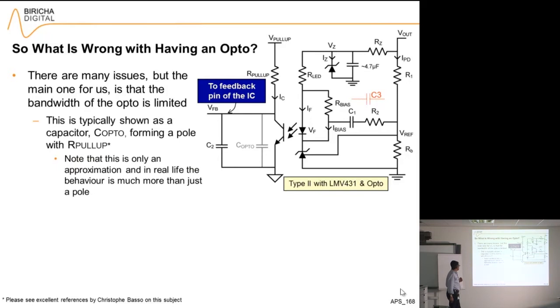To represent this bandwidth, we typically show it with C_opto. This is not real, that is a parasitic inside of the optocoupler. But you can see that by pretending that it is a capacitor, the pull-up and C_opto are forming a low-pass filter which will allow us to start analyzing the optocoupler taking into account its bandwidth.